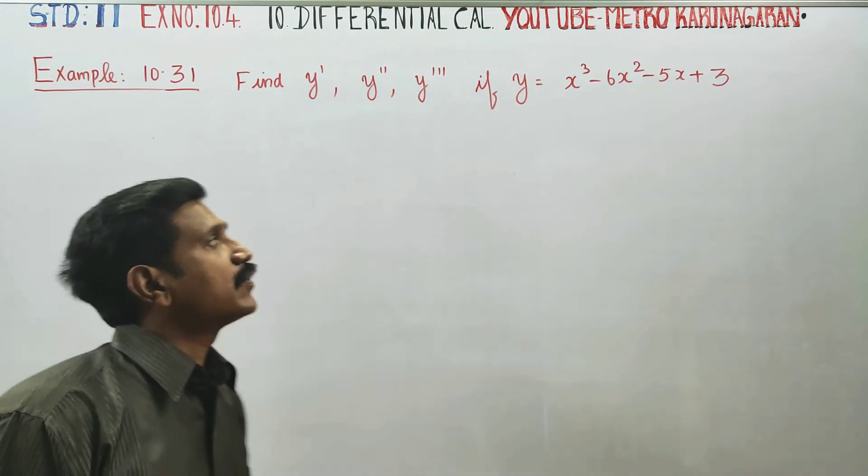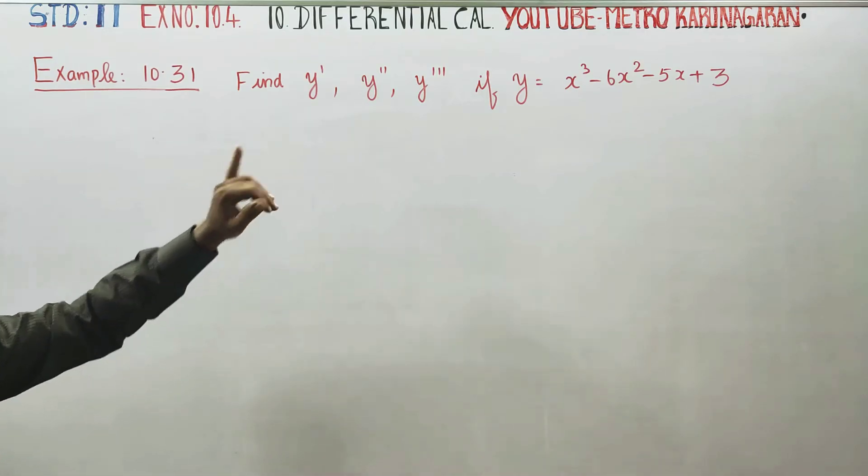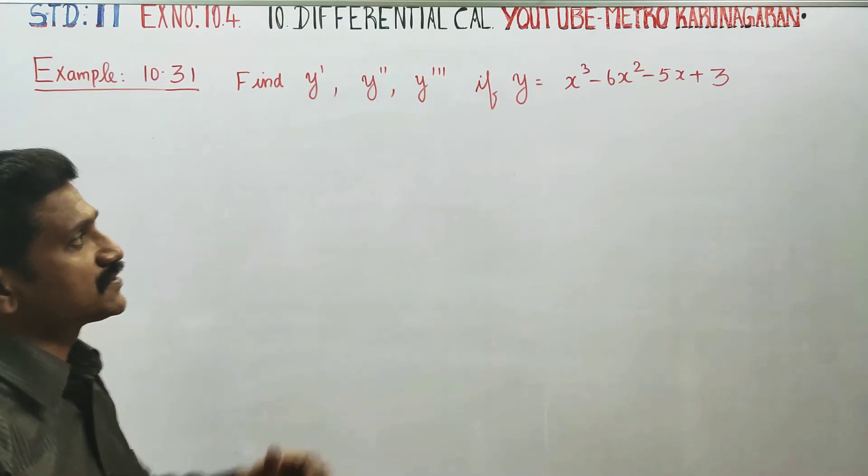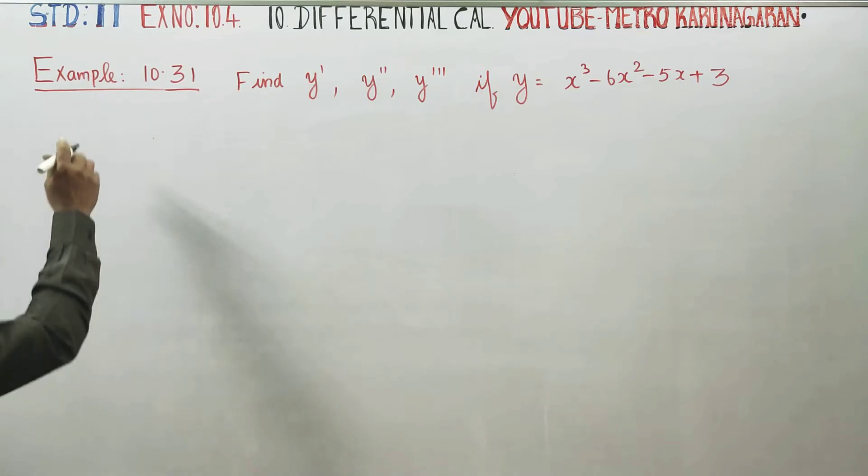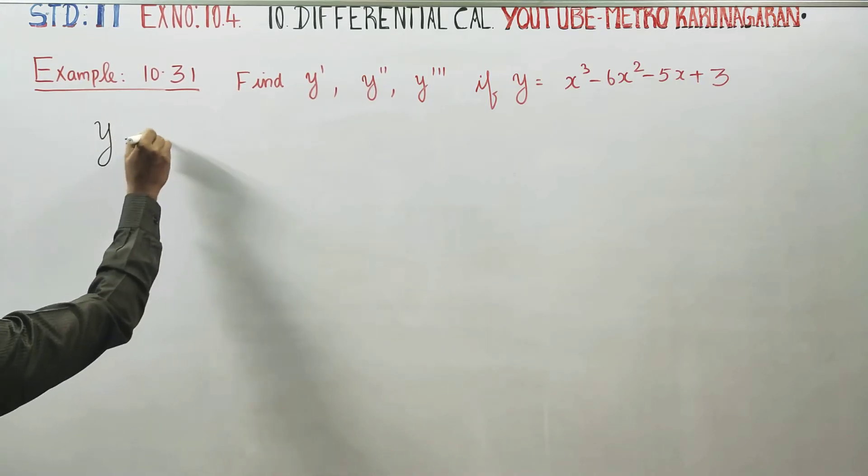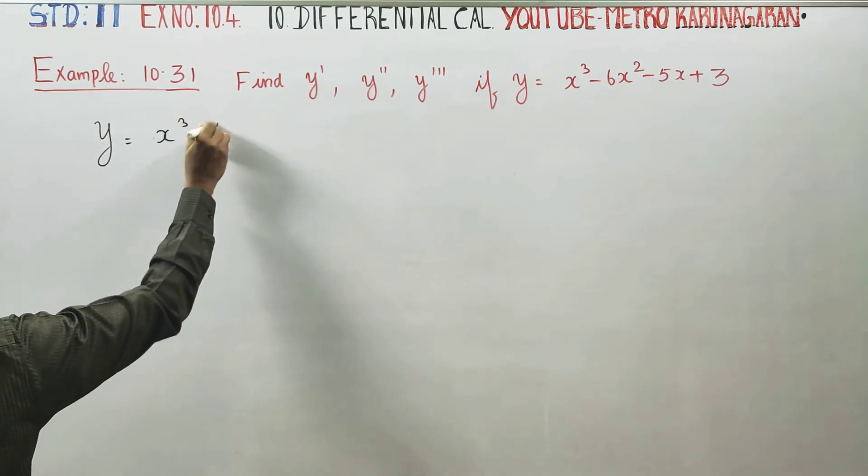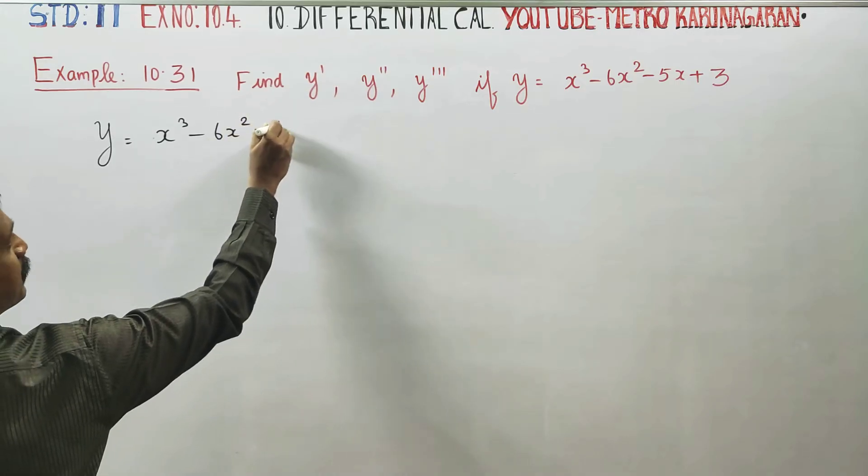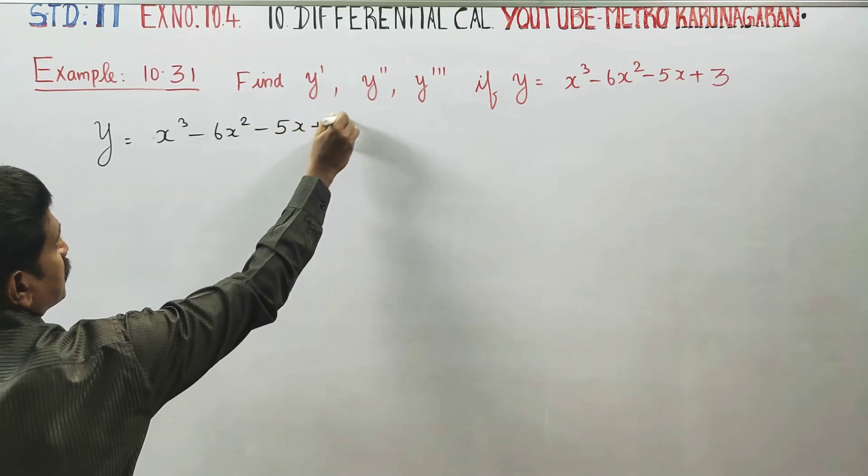In example 10.31, we are going to find the successive differentiation - first, second, and third - of the function y = x³ - 6x² - 5x + 3.